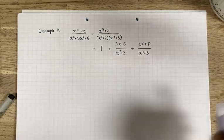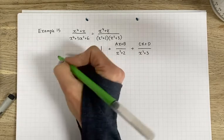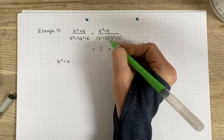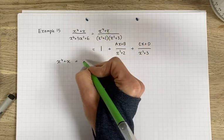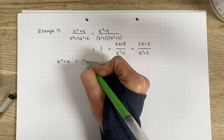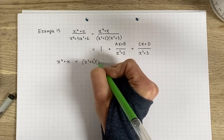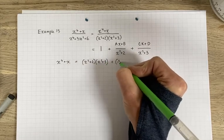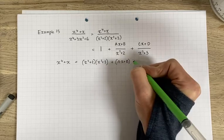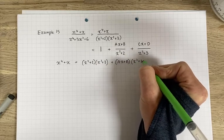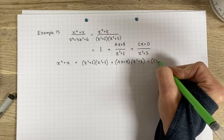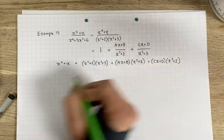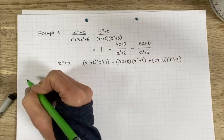All right, so let's bring the right hand side to the common denominator and then we'll be left with comparing the numerators. So from this side you'll have x to the power of 4 add x and on this side you'll have 1 times x squared plus 2 and then x squared plus 3. Then you're going to have ax plus b multiplied by x squared plus 3. Then you're going to have cx plus d multiplied by x squared plus 2.